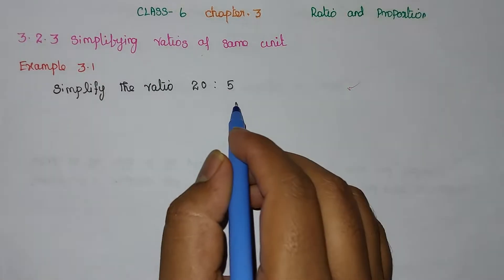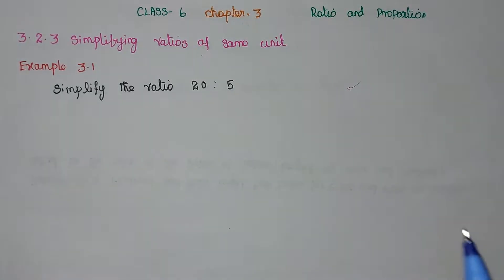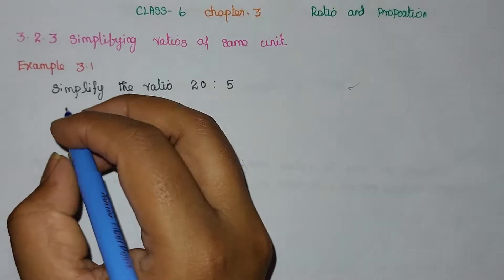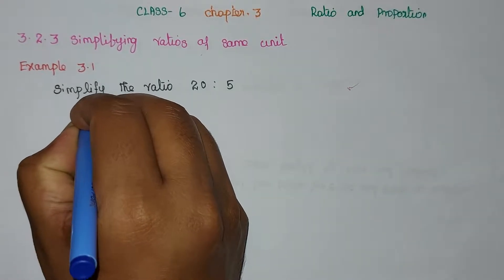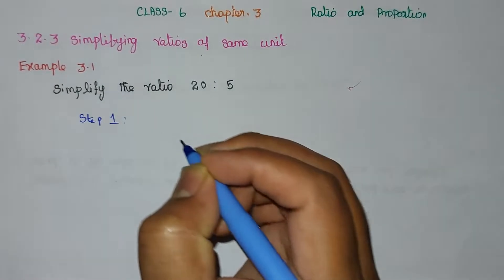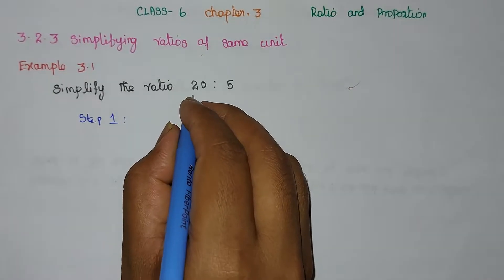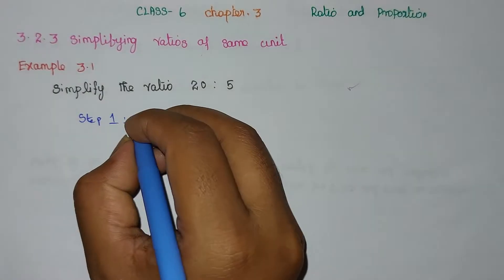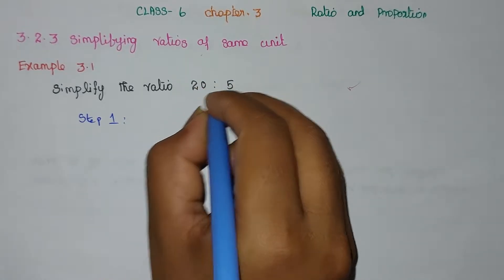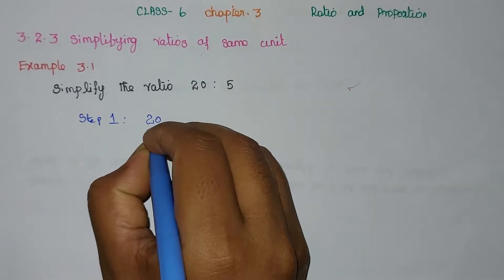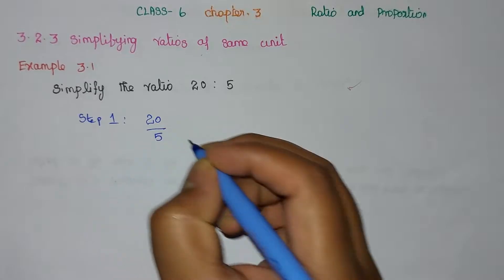Simplify the ratio 20 is to 5. Step 1: we write this in fraction format. So the fraction format will be 20 divided by 5.